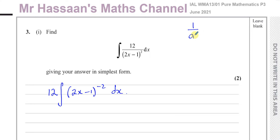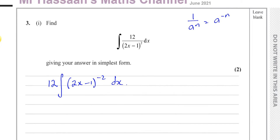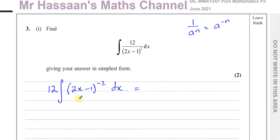We know 1 over a to the power of n is the same as a to the power of minus n, and the same applies to this whole bracket. This can be integrated by the reverse of the chain rule, or integration by recognition, where the expression is multiplied by a term which is the differential of what's inside it — and here that differential of (2x minus 1) is a constant.